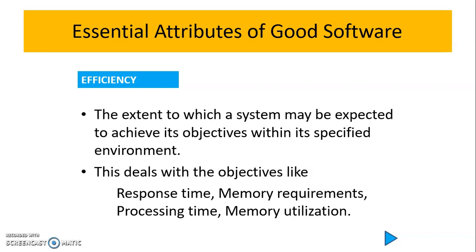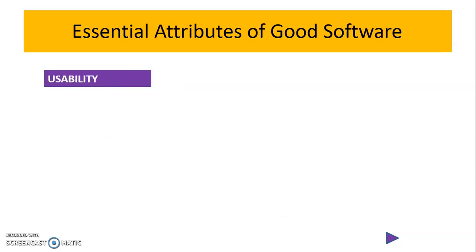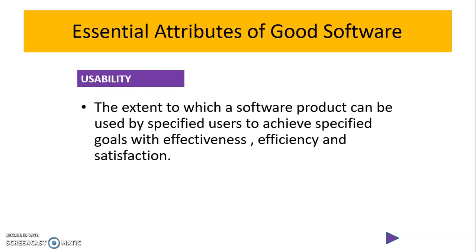The last essential attribute is usability — how the user can use the software to achieve specified goals like effectiveness, efficiency, and satisfaction. These are the essential attributes of good software. Hope you have understood it properly. Thank you.